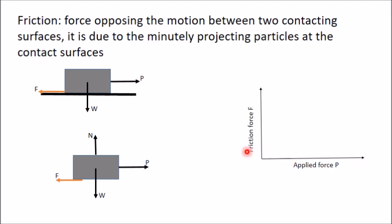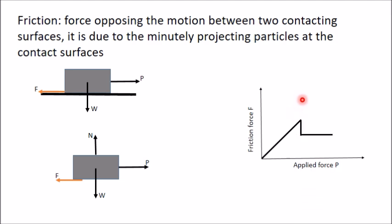You can plot a curve between P and F, with applied force P along the x-axis and friction force along the y-axis. Initially when there is no applied force there is no friction force, but as you increase P, friction force also increases until it reaches its maximum value. After that if you increase P, the value of F cannot increase — it suddenly comes down and then remains constant.